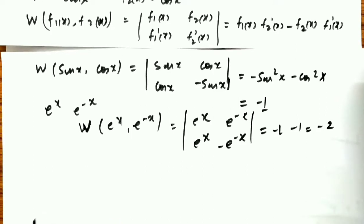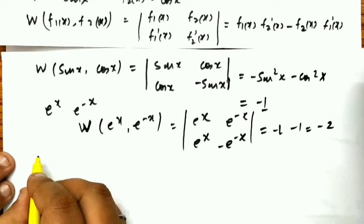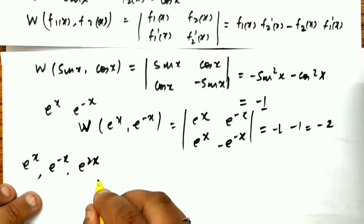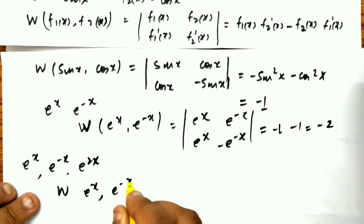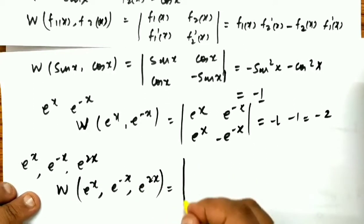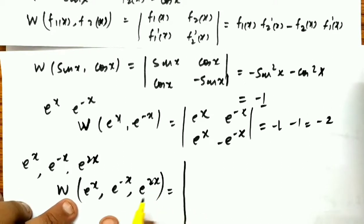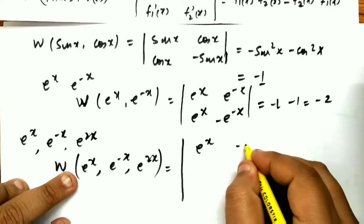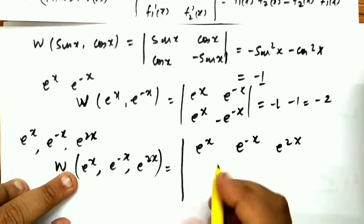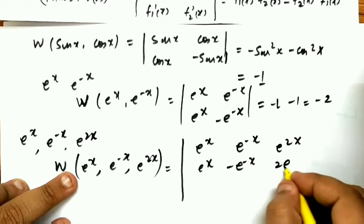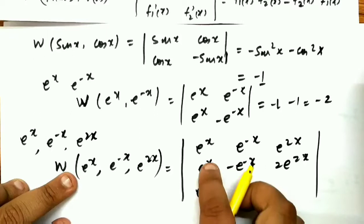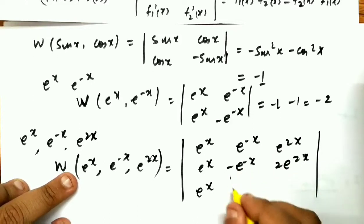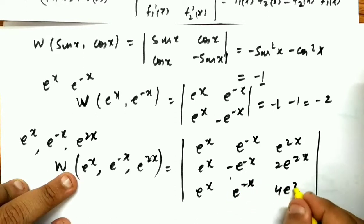Now for three functions: e^x, e^(−x), and e^(2x). The Wronskian is a 3×3 determinant, taking derivatives up to the (n−1) = 2nd order. The first row is e^x, e^(−x), e^(2x). The second row (first derivatives) is e^x, −e^(−x), 2e^(2x). The third row (second derivatives) is e^x, e^(−x), 4e^(2x).